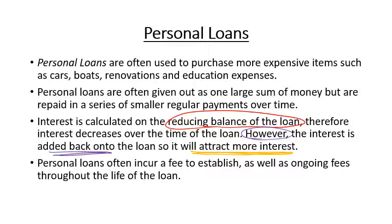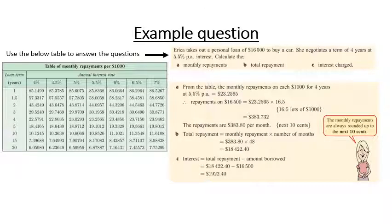Here's an example question about personal loans. Erica takes out a personal loan of $16,500 to buy a car, negotiating a four-year loan term at an interest rate of 5.5%. We use a table of monthly repayments per $1,000 borrowed. Looking up four years at 5.5% in the table gives a monthly repayment rate of $23.2565 per $1,000 — this is the key figure we'll use.